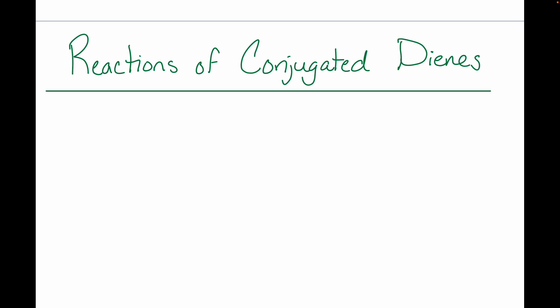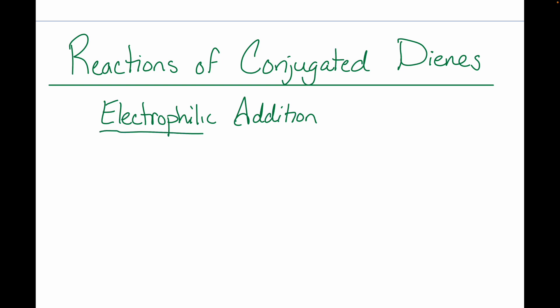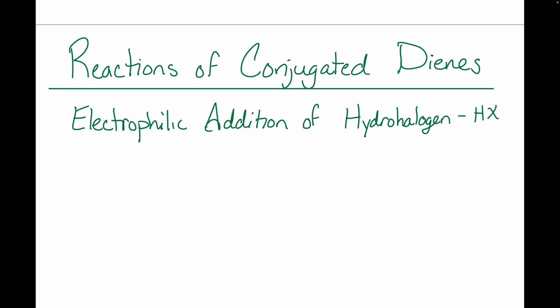We've got two reactions of conjugated dienes to worry about. I'm going to postpone Diels-Alder reactions until next Monday. Today we're going to strictly focus on electrophilic addition reactions — specifically electrophilic addition of a hydrohalogen, meaning HBr or HX: H plus a halogen.